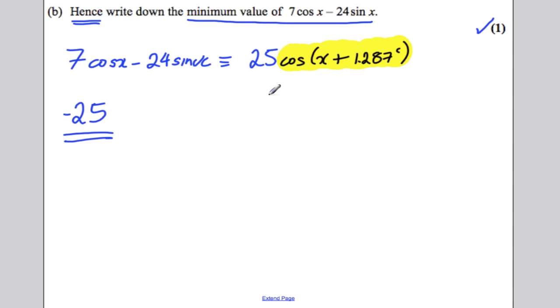Students, a lot of students get confused and try and solve this and make it equal 0 and all sorts. No. Cos minimum value is negative 1. So 25 cos of something, its minimum value is negative 25.